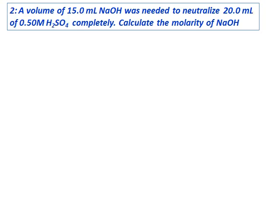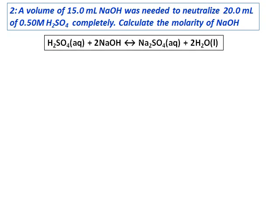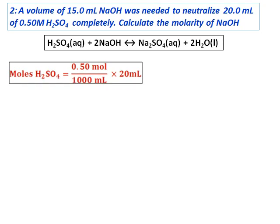A volume of 15.0 milliliters of sodium hydroxide was needed to neutralize 20.0 milliliters of 0.5 molar sulfuric acid completely. Calculate the molarity of sodium hydroxide. We start by writing the neutralization equation: sulfuric acid reacts with sodium hydroxide to give sodium sulfate and water. We can calculate the moles of sulfuric acid from the molarity and volume given, and that comes to 0.01 moles.